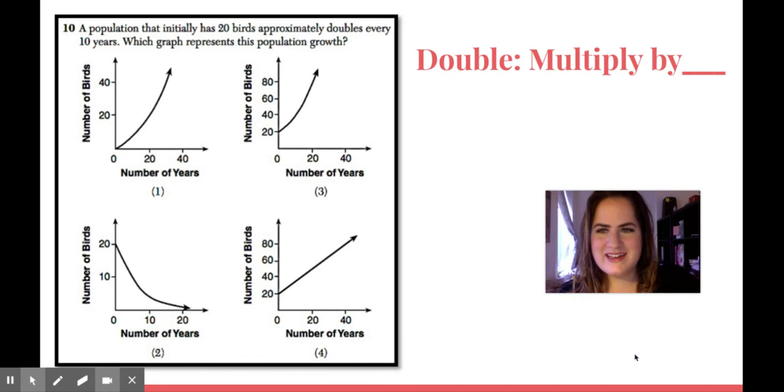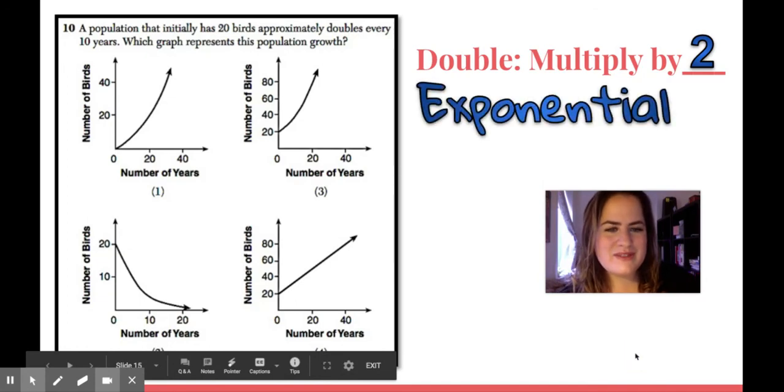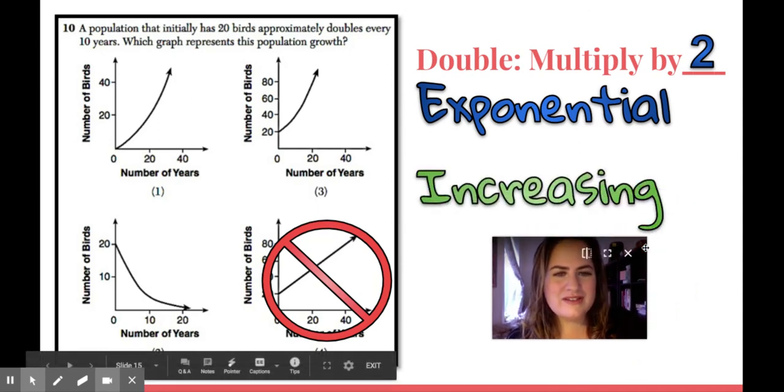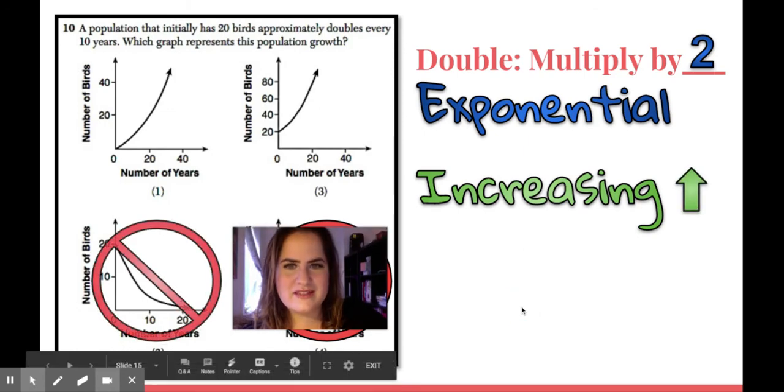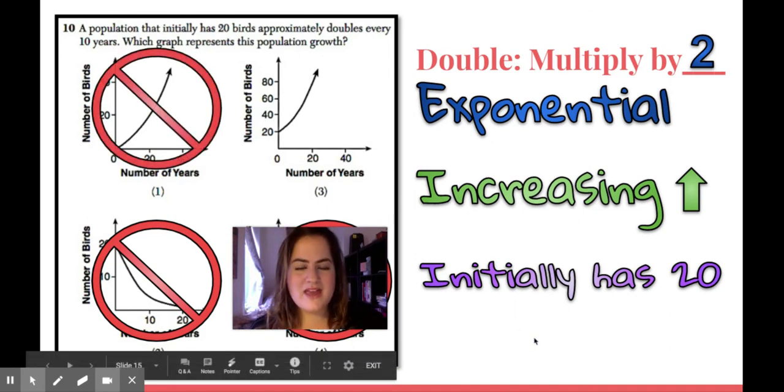One more. This one's a little tricky. So a population that initially has 20 birds approximately doubles every 10 years. Which graph represents this population growth? So take a guess, and then we'll go over it. Okay, so here's how you do it. When they say doubles, that means multiply by two. Anything that's being multiplied by two is going to be an exponential function. So I get rid of that linear function right away. Doubles also means that our amount is increasing, which means going up. So any graph that's decreasing or going down can go. Initially has 20. So between choice one and choice three, which one starts at 20? That would be choice three.